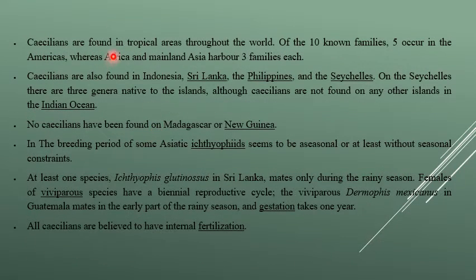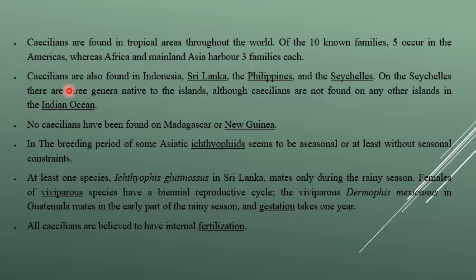Caecilians are found in tropical regions. There are 10 to 9 families; 5 are in America and 3 families are found elsewhere. Caecilians are found in India, Indonesia, Sri Lanka, and the Philippines.